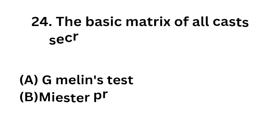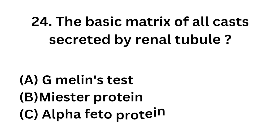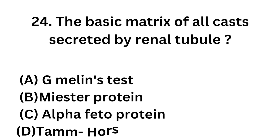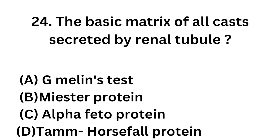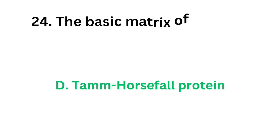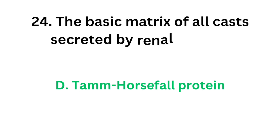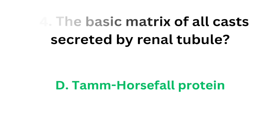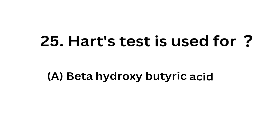Question number 24: What is the basic matrix of urinary casts secreted by the renal tubule? Option A: Gmelin's protein. Option B: Mister protein. Option C: Alpha-fetoprotein. Option D: Tamm-Horsfall protein. The correct answer is Option D: Tamm-Horsfall (TH) protein. The basic matrix of urinary casts secreted by the renal tubule is TH protein.